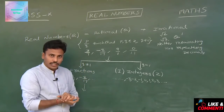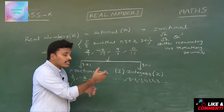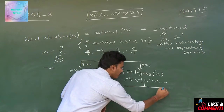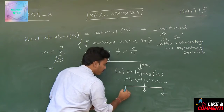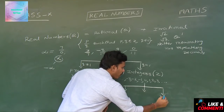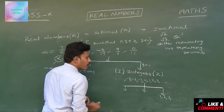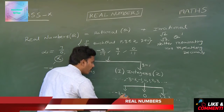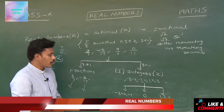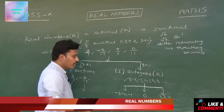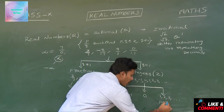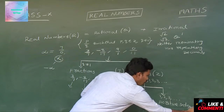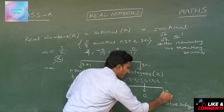Again, looking at integers, further classification is possible. I will classify integers into three parts: positive integers, 0, and negative integers. The numbers 1, 2, 3, and so on are termed as positive integers, denoted by the letter Z plus.